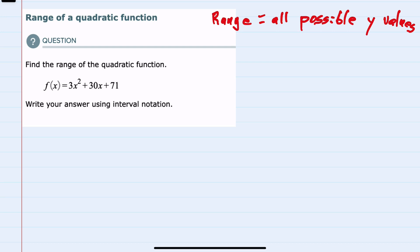We'll start by recalling that the range will be all of the possible y values. If we think of the shape for this quadratic, since the leading coefficient is positive, we know that it will be opening upwards.